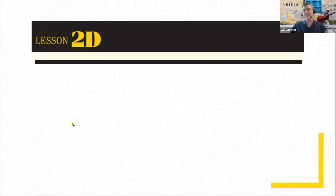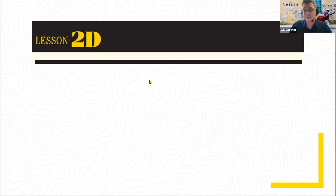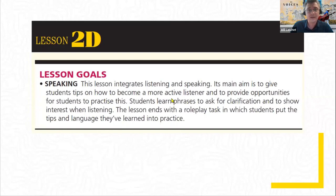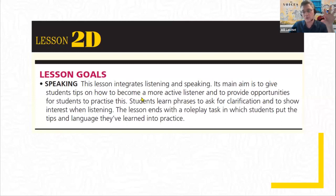Today's lesson is a D lesson in Voices. All D lessons are lively video lessons that illustrate communicative scenarios and provide insight into different communication skills — they're also where you find a lot of the mediation activities and language. Here are the lesson goals for lesson 2D at elementary level from the teacher's book: it's an integrated skills lesson — listening and speaking. The aim is to give students tips on how to become an active listener and practice it, learn language to ask for clarification and show interest, and then do a role-play task.